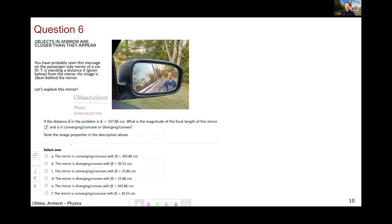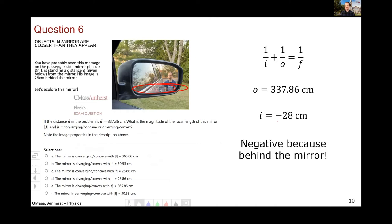Question six was the first of a pair. Objects in mirror are closer than they appear, a little phrase you've probably seen on the passenger side mirror of a car. This is, once again, one over I, one over O equals one over F. The object distance is given in the problem. The key here is that the image distance must be negative because my image is behind the mirror. The image is not on the outgoing side. And so the image distance is negative. When you solve that out, you get negative 30.53.